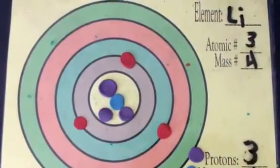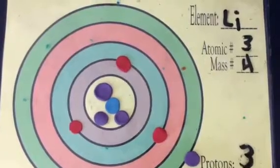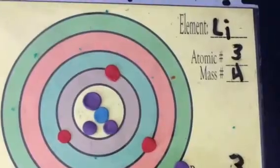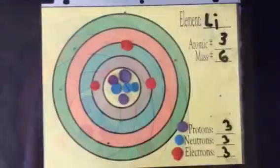Lithium-4 is the least used of the isotopes of lithium and has the shortest life of 9.1 times 10 to the negative 23rd power seconds. Now, time for lithium-6.